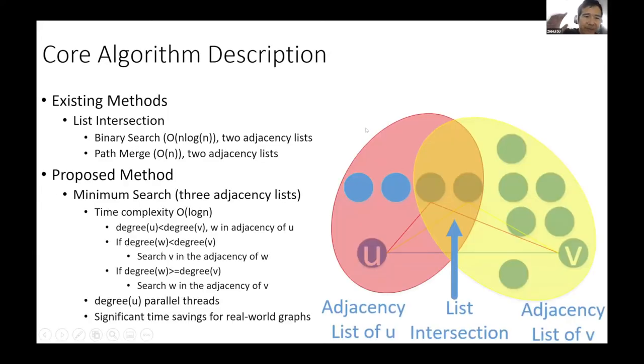Here, I'll introduce the basic idea of our core algorithm. For triangle counting, the basic idea is very easy. For any edge from U to V, if you have U's adjacency list and V's adjacency list, we just get the intersection of the two adjacency lists. All the vertices in the intersection can form a triangle with U and V. This is based on the idea of list intersection.